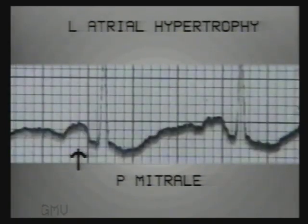This is another P mitrale — not notched, but 3 small squares wide.